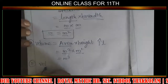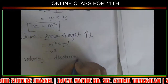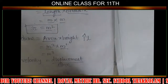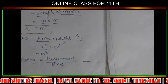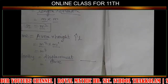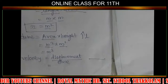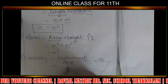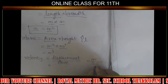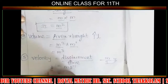Velocity is displacement divided by time. Displacement is the same as distance but with direction. We measure displacement in meters and time in seconds. So the SI unit of velocity is m s⁻¹.